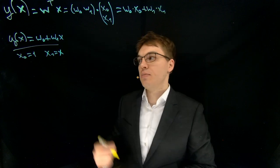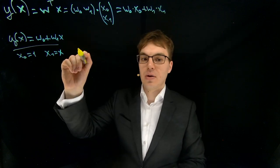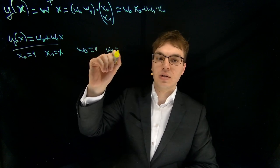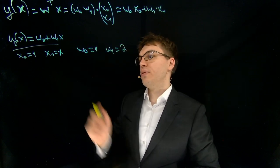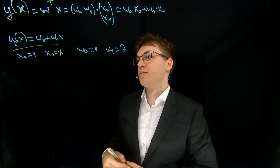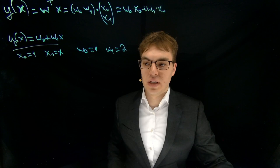We are drawing this line, but we are given some parameters and these parameters are w0 equals 1 and w1 equals 2. So if we fill it in here, then we can see what happens. We will get a straight line.